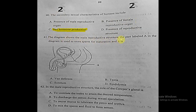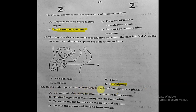Question forty-one: the diagram shows the male reproductive structure. The part labeled A, which stores sperm for maturation, is the epididymis. The correct answer is epididymis.